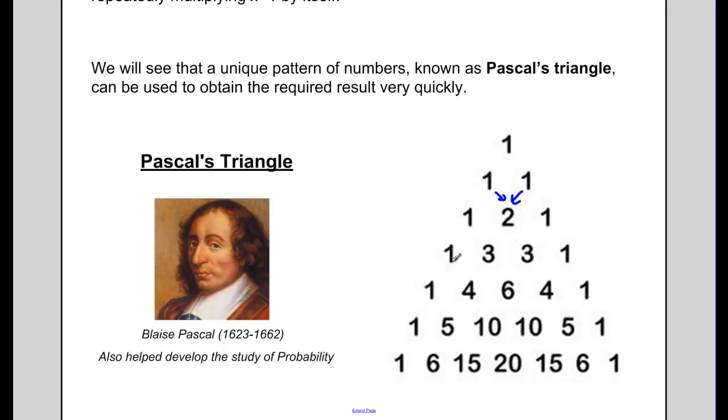The next row starts with a one and ends with a one, but we get the numbers in between by taking the two numbers above each of these. So one plus two is three, two plus one is three. So this row is one, three, three, one. And then so on and so forth. One plus three is four, three plus three is six, three plus one is four. And then the next row and the next row.